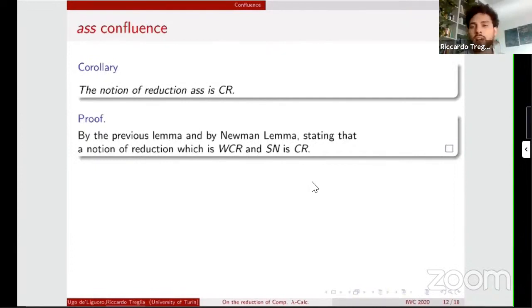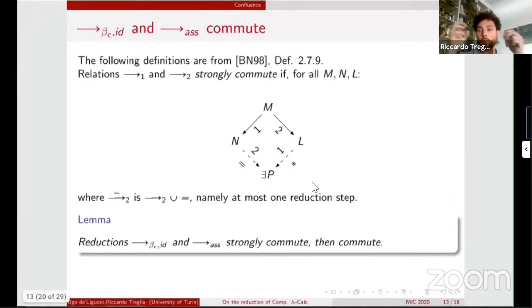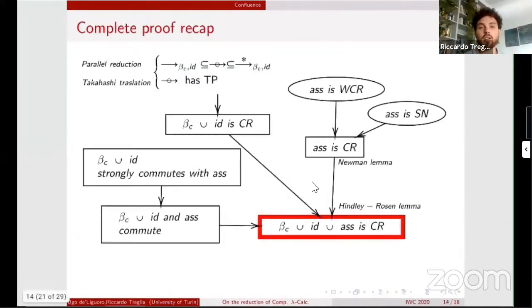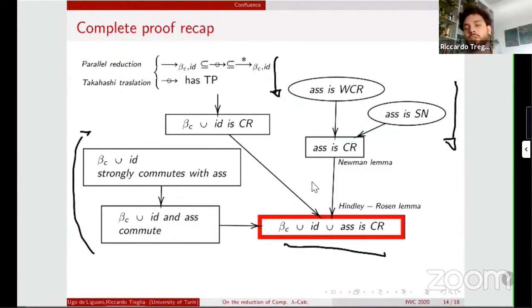So combining strongly normalizing with the weakly Church-Rosser property, we have the Church-Rosser property for AS reduction. Now we have to combine these two confluence results, and we will do that proving that the two reductions commute. We will do that proving a stronger property, saying that beta C plus seed and AS actually strongly commute. So summarizing what we did so far, we proved that by Takahashi method, the expanded Takahashi method, the confluence of beta C plus seed, then we proved the confluence of AS by means of Newman lemma. We combine this result by means of the commutativity lemma. And so we have the confluence of our calculus.